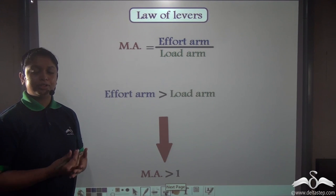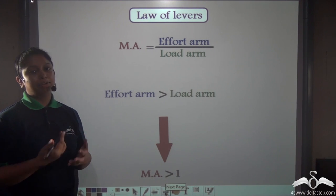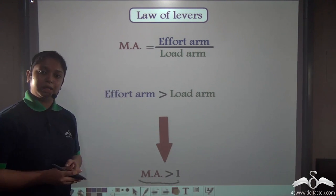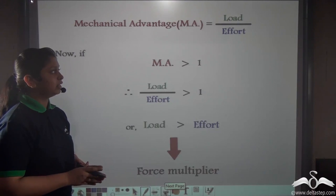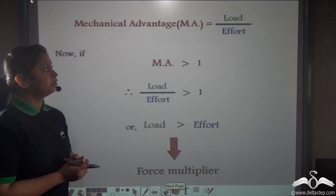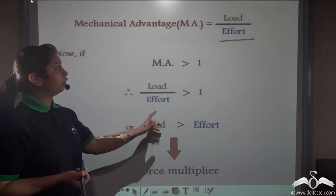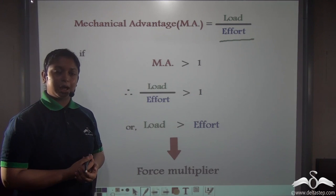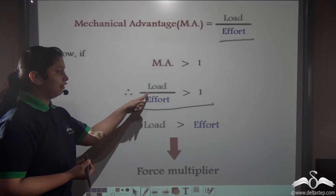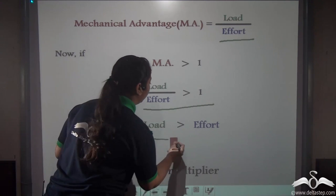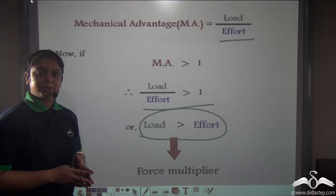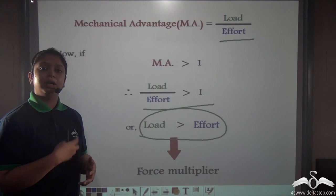Mechanical advantage is the ratio of the effort arm to the load arm. In class 2 levers, since the effort arm is greater than the load arm, the mechanical advantage is always greater than one. Another expression for mechanical advantage is load divided by effort. If mechanical advantage is greater than one, then the load is greater than the effort — meaning we apply a smaller effort to overcome a larger load.